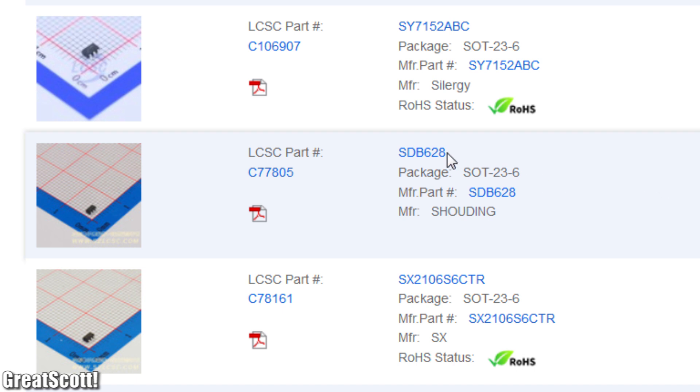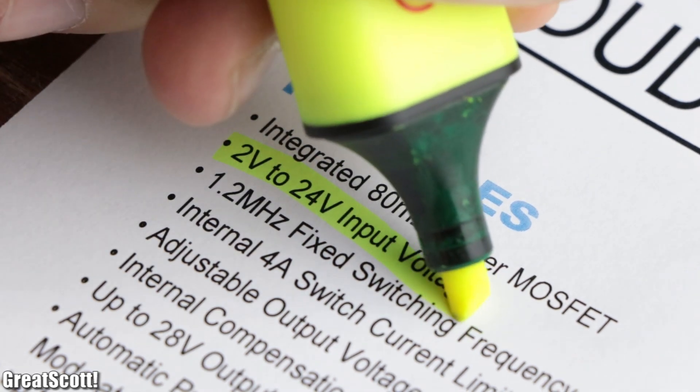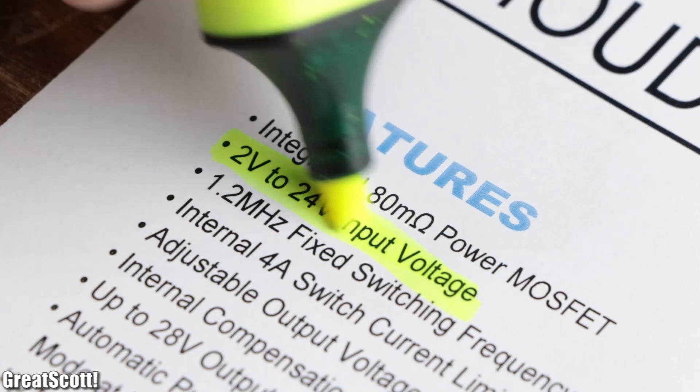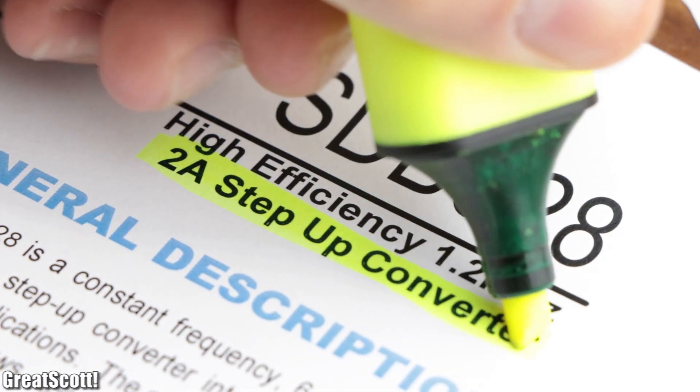What I found was the SDB628, which according to its datasheet has a low input voltage, a high efficiency and delivers up to 2 amps.